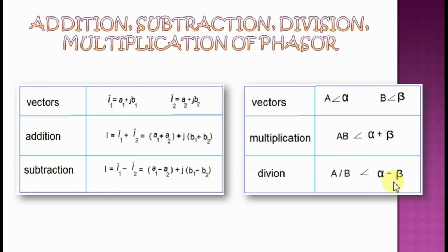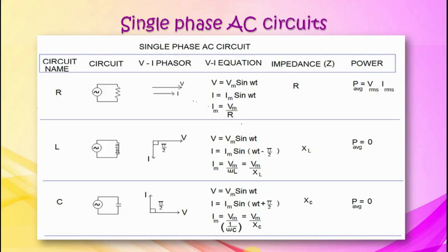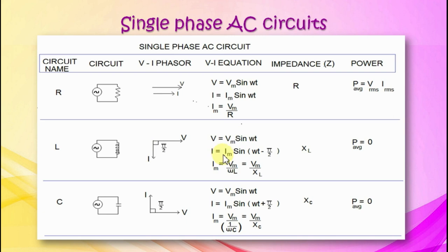Single phase AC circuits include R, L, C, RL, RC, and RLC types. In a pure R circuit, current and voltage are in phase. Voltage is Vm sin(omega t) and current is Im sin(omega t). Im equals Vm by R. Average power is Vrms times Irms. Impedance is R. In a pure L circuit, current lags voltage by 90 degrees. Current is Im sin(omega t minus 90). Im equals Vm by omega L. Omega L is inductive reactance XL. Average power is zero. Impedance is XL.